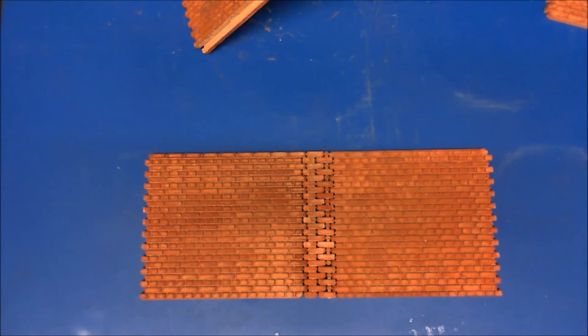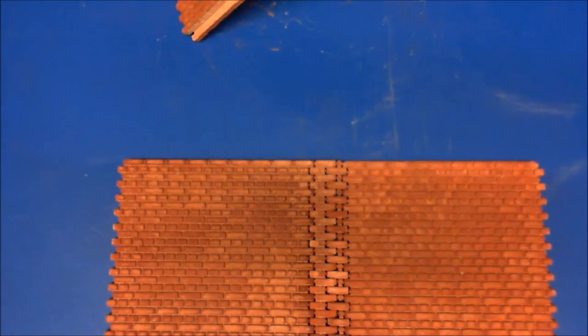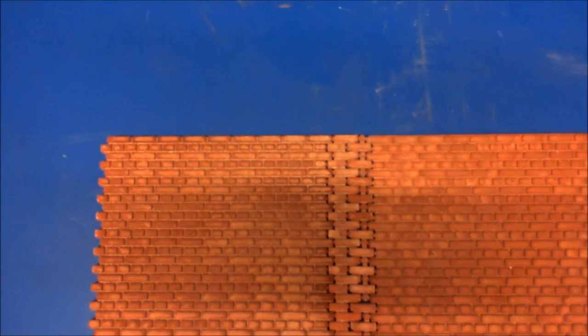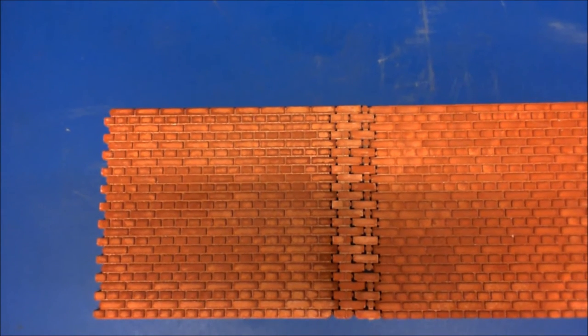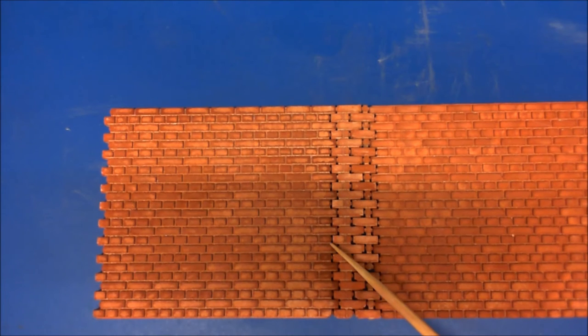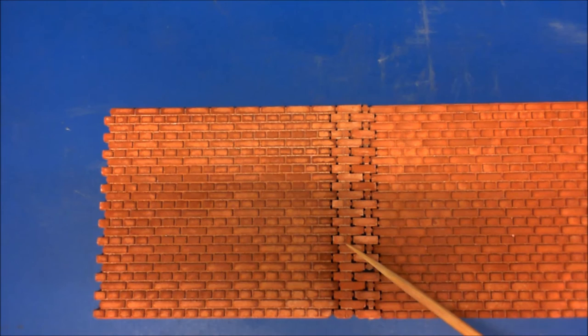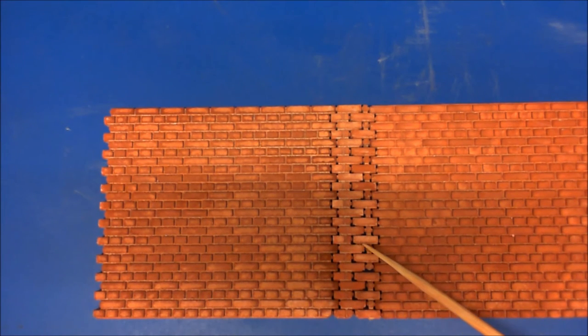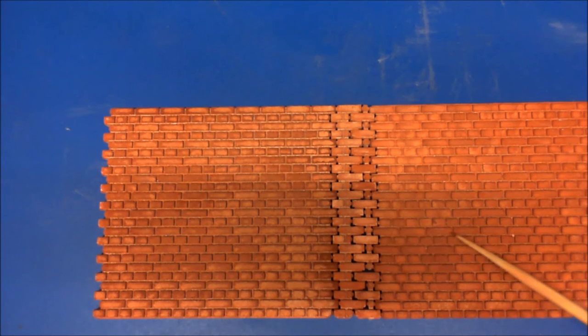So as you can see, I'll bring you down just a little bit closer. Right, so as you can see now, you have your header course, which then comes into a queen closure, a full brick which goes around the corner, then straight into your header course again. And vice versa with your stretcher course.